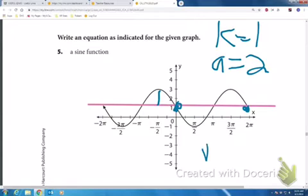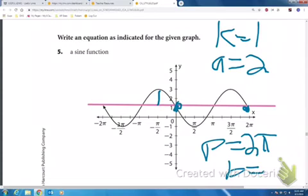So the period is 2π, which makes b equal to 1.